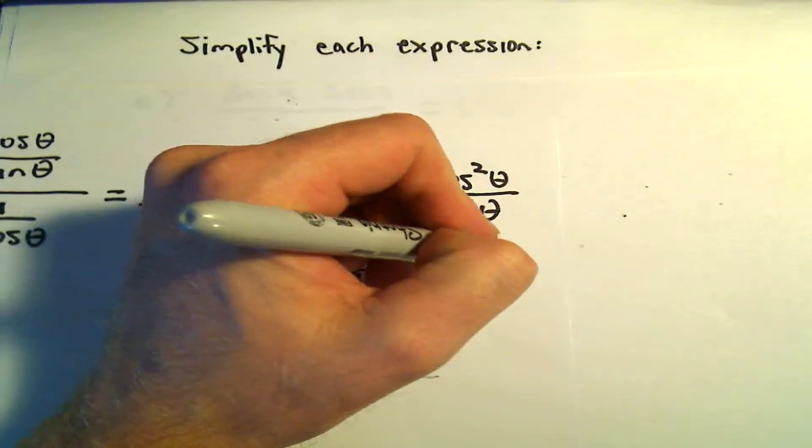Cosine times cosine squared is going to be cosine cubed of theta over sine cubed of theta. But we can really just factor out the exponent. We can write this as cosine over sine all cubed. And remember cosine over sine, that's simply cotangent. So really we have cotangent of theta cubed. Or we can rewrite that as cotangent cubed theta.